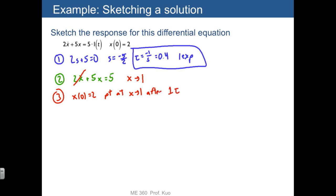So what does that look like? Let me see if I can sketch this here. Here's one time constant of 0.4. We have a final value of 1, and we have an initial condition of 2. We know that we need to be pointing at the final value with a straight line.